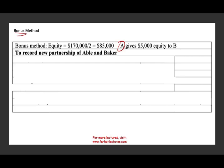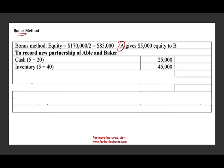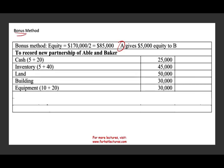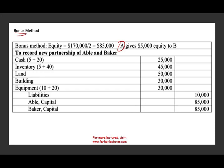So what entry would the partnership record on the day of formation? They contributed cash of 25,000 — debit cash. Debit inventory 45,000. They contributed land, building, and equipment. Those are the debits. The partnership assumed the liability of 10,000. Then Abel's capital balance is 85,000 and Baker's capital balance is 85,000. A gave up $5,000, which went to B — B is the partner that received the bonus. This is the bonus method.